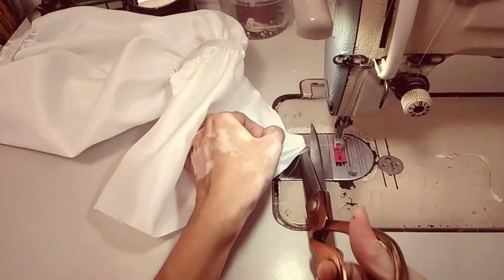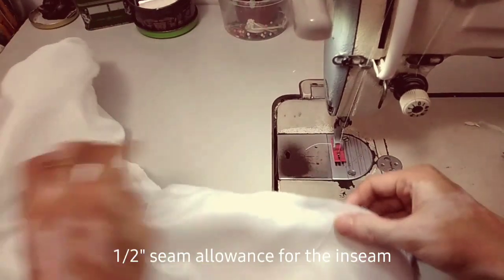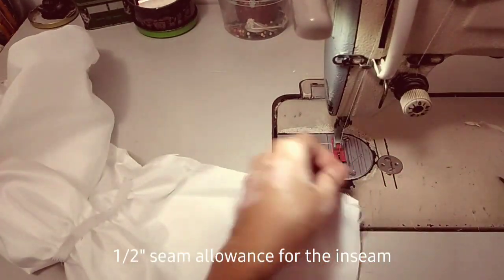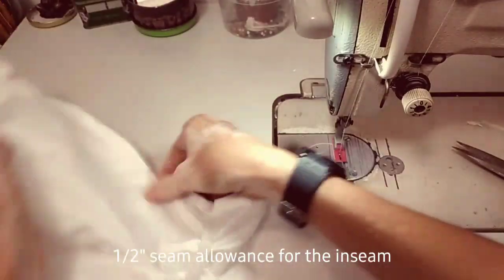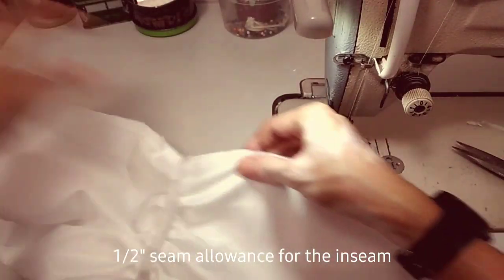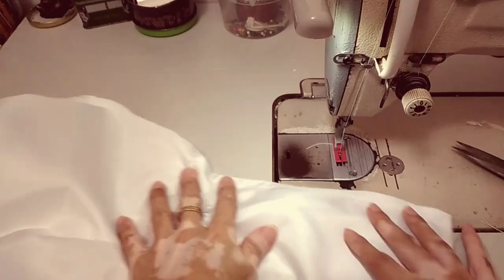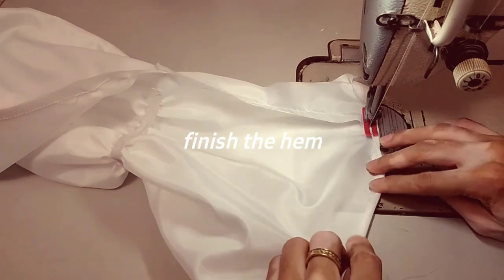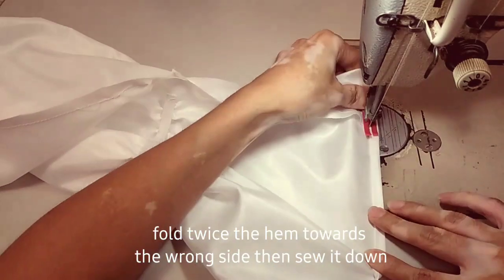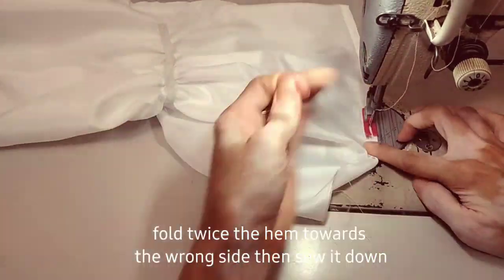One half inch seam allowance for our inseam. To finish the hem of the sleeves, I fold it twice and then sew it down.